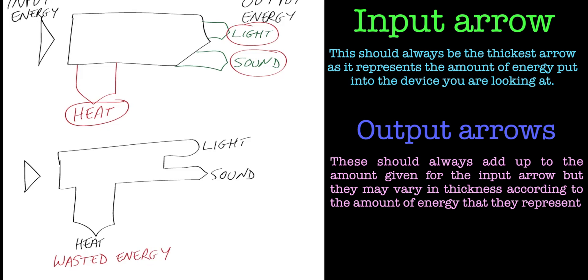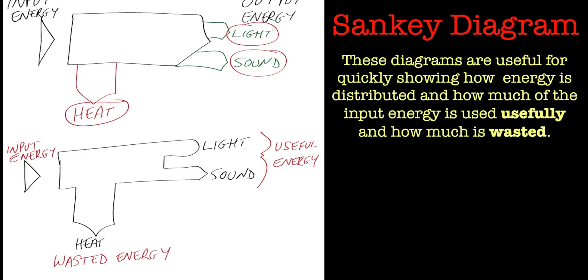This will be very useful later on in examples where we work out the efficiency of our devices, whether it be a TV or a kettle. So the Sankey Diagram basically tells us how much of that input energy is being used usefully and how much is being wasted.